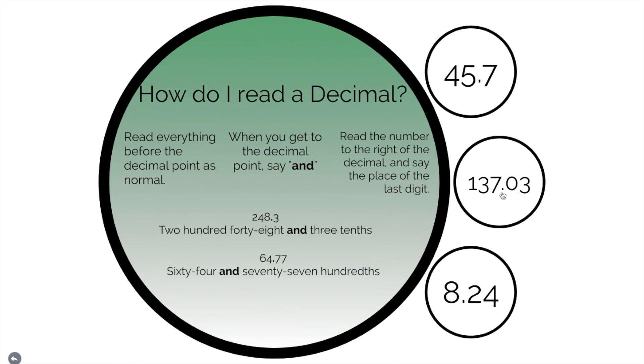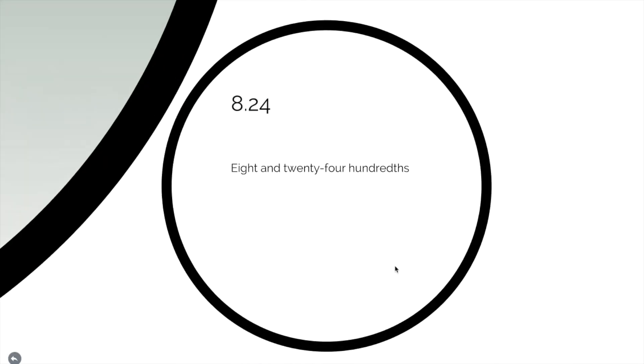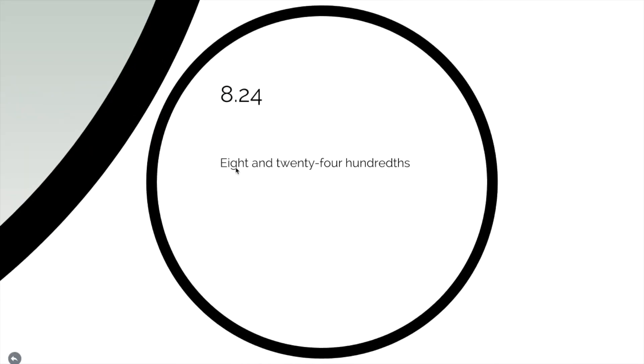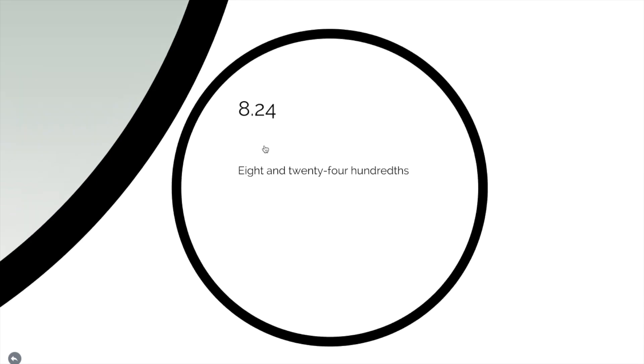What about this guy? This one looks tough. I'm going to save that one. Let's come to this one. What about this? Eight and 24 hundreds. Eight and 24 hundreds. Because we have 24 and the four is in the hundreds place.